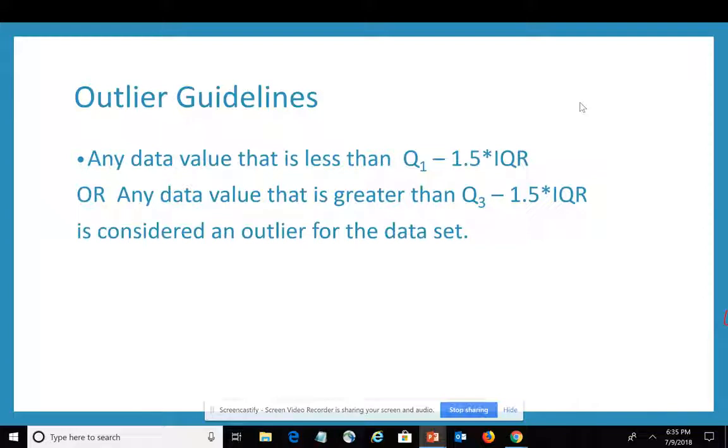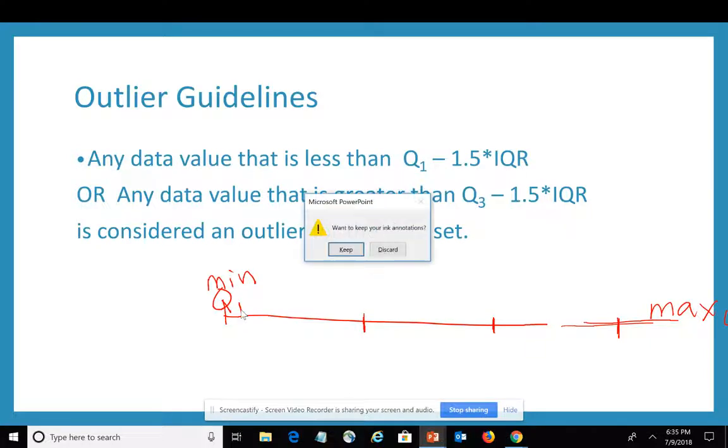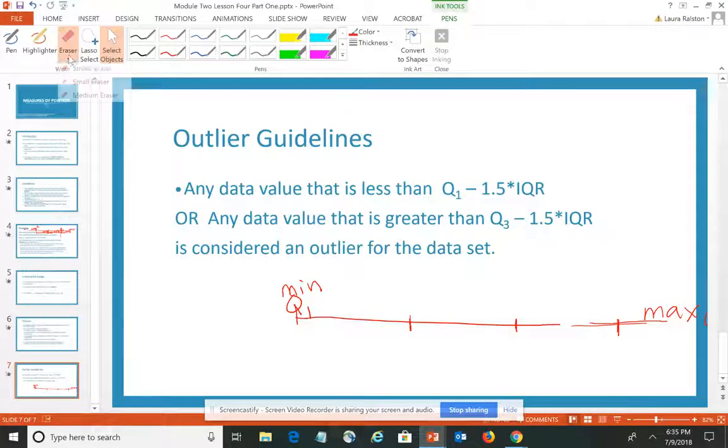Let's go back to our picture. You have the minimum and the maximum, and then we have it divided into our four pieces where each piece has 25%. Here is Q1, and over here is Q3.